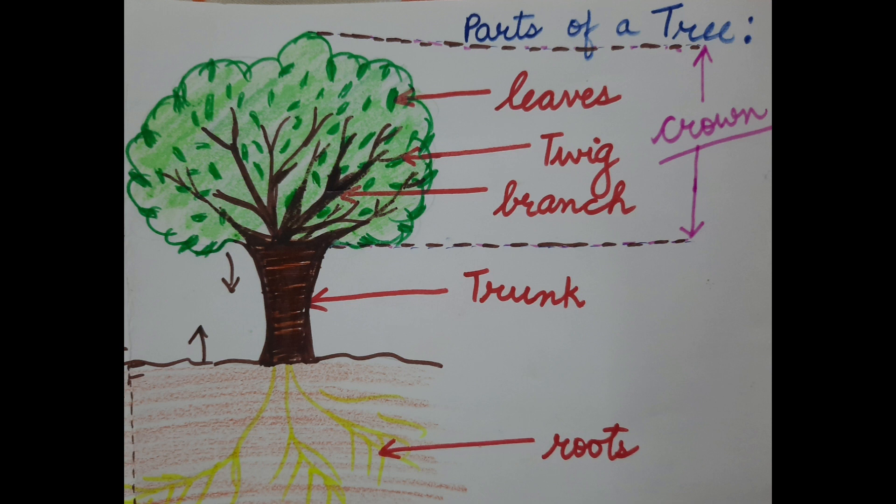Leaves use the sun's energy to convert carbon dioxide from the atmosphere and water from the soil into sugar and oxygen. The sugar, which is the tree's food, is either used or stored in the branches, trunk or roots of the tree. The oxygen is released back into the atmosphere.